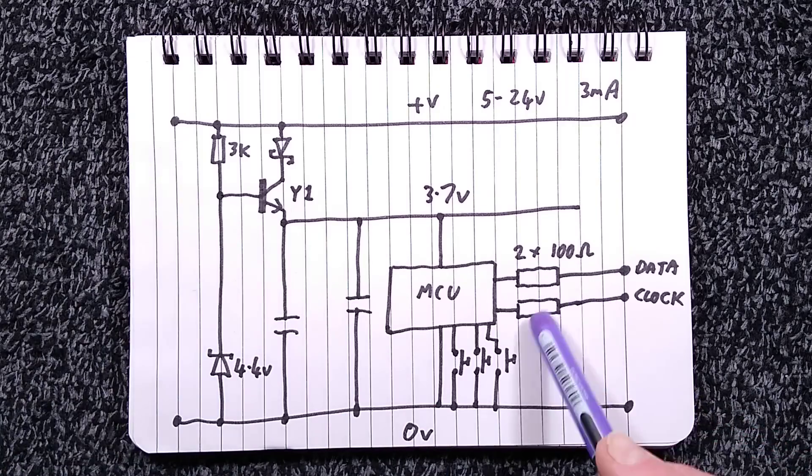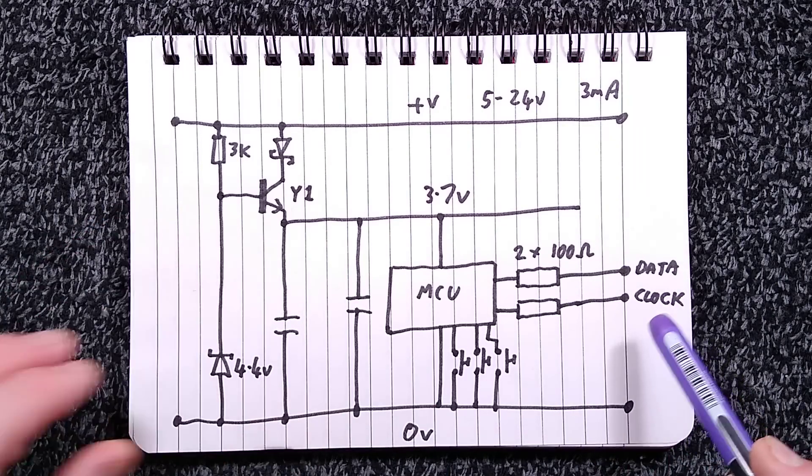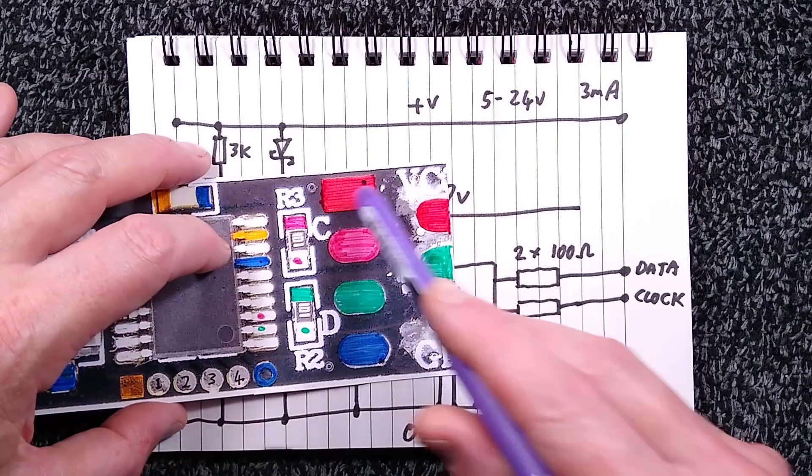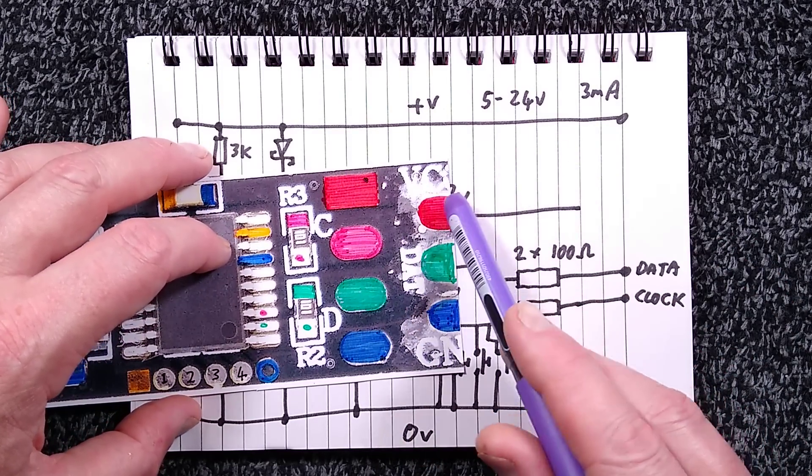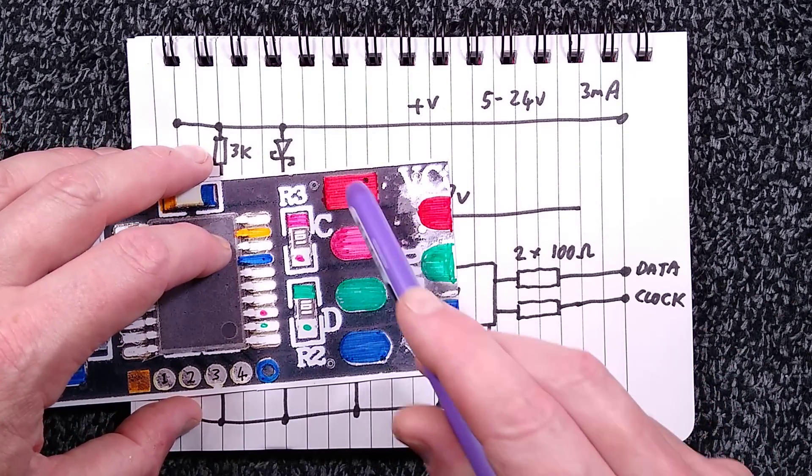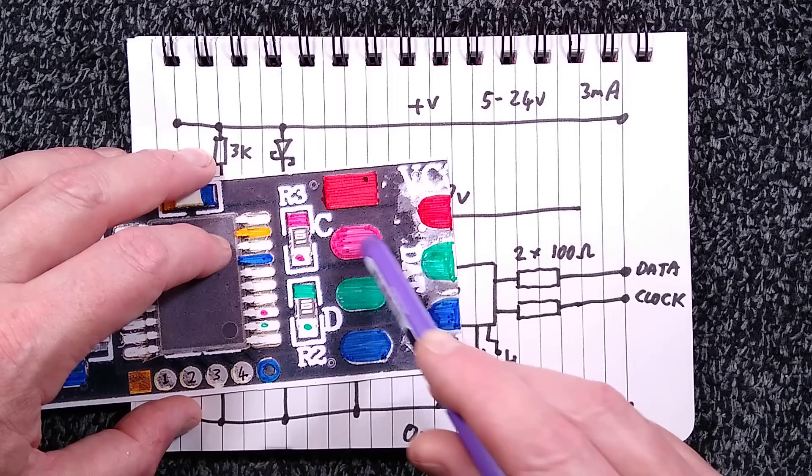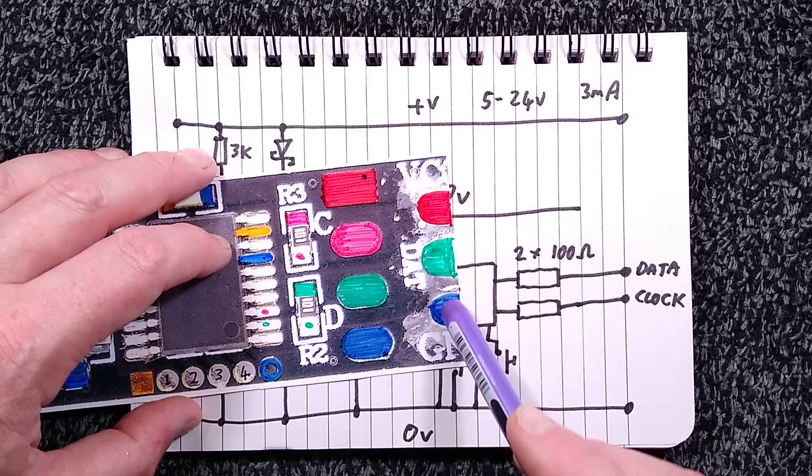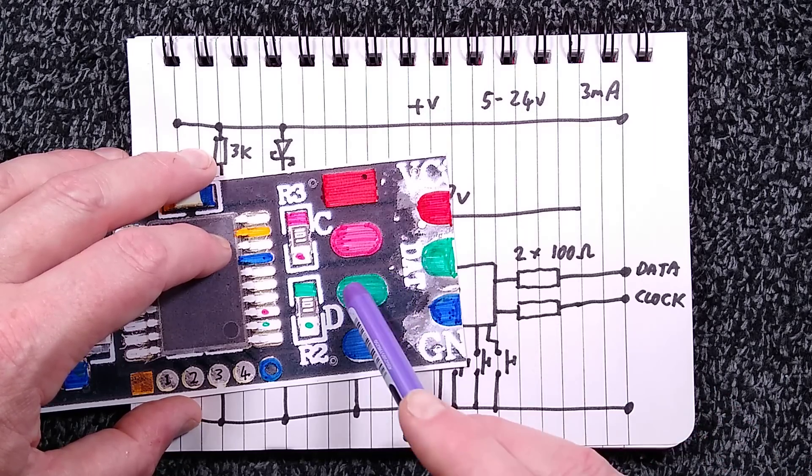There are two 100 ohm resistors, there they are there. One for data and one for clock. In this case only one of them is used. They have got the extra pads here so that if you have a four pin cable coming on you can go on to positive, clock, data, and zero volts. But in this case they've gone to these three pins for the connection output which is just using the data.